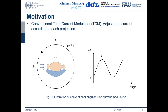First of all, let's have a quick recap about tube current modulation in CT. Conventional tube current modulation adjusts tube current according to each projection. In this figure, we can see that the attenuation of the x-ray path at position A is apparently shorter than that from position B. So we can modulate the tube current at position A to be lower so that the dose exposed to the patient can be reduced. In contrast, we can increase the tube current at position B so that image quality can be preserved.